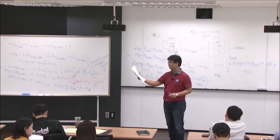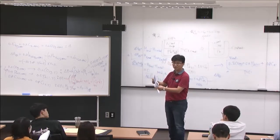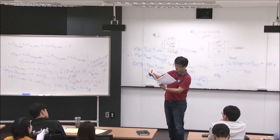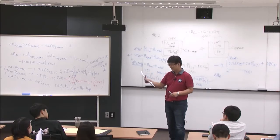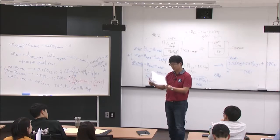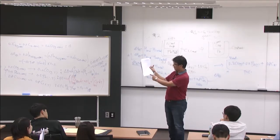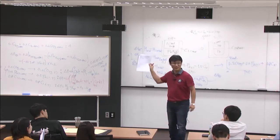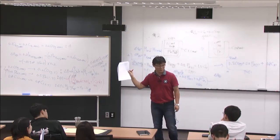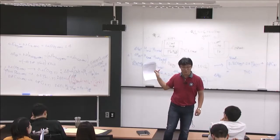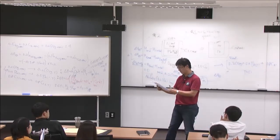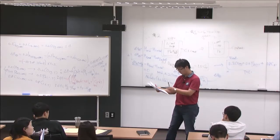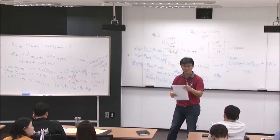For example, one student — Jo Young Min — who is not here today, wrote down the correct final quadratic equation but didn't solve it, and got 16 out of 20, losing 4 points. He could have solved it very quickly — it's not a complex equation. However, all the process was correct.